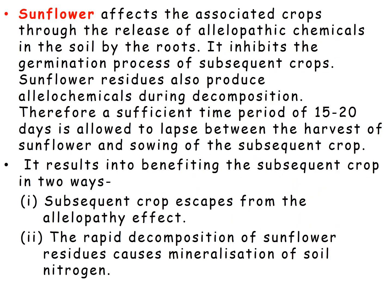Sunflower affects associated crops through the release of allelopathic chemicals in the soil via its roots. These root chemicals inhibit the germination process of subsequent crops. Sunflower residues also produce allelopathic chemicals during decomposition.